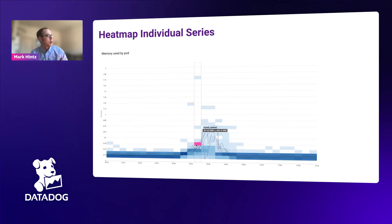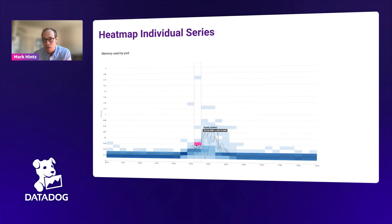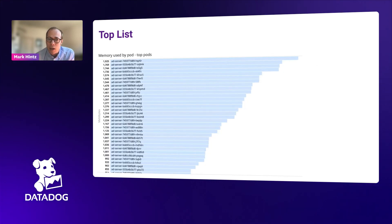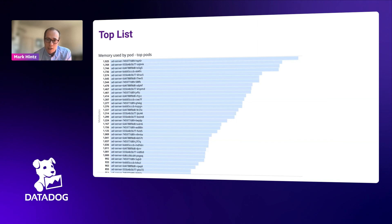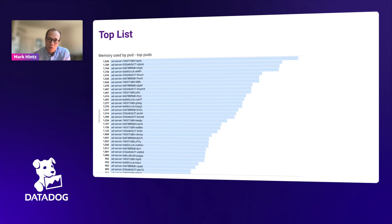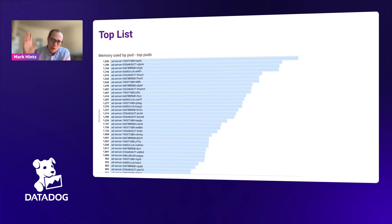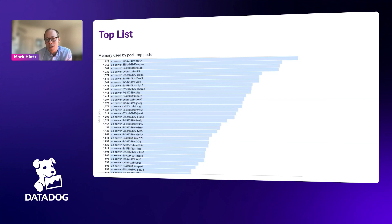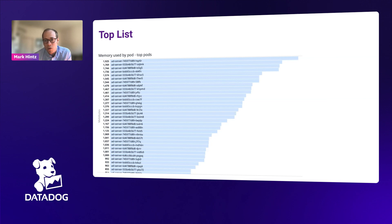There are times when you might not want to visualize data over time but want to see aggregates. For that, you might create a top list, which shows the same dataset aggregated over the entire time window — summing all values sampled during that window into a single aggregate and sorting the results. Top list is a great way of seeing the biggest contributors among a cohort. It's a simple and easy visual comparison tool.